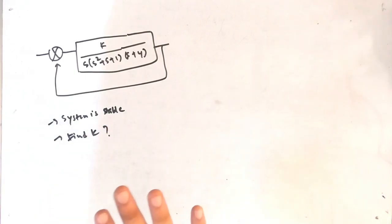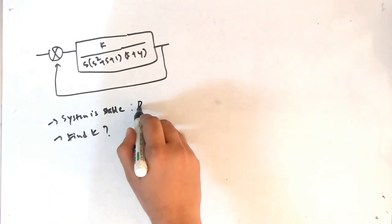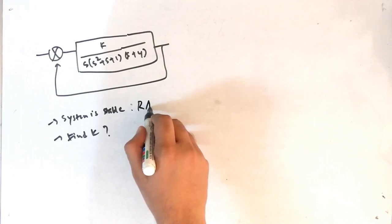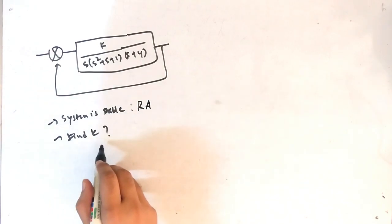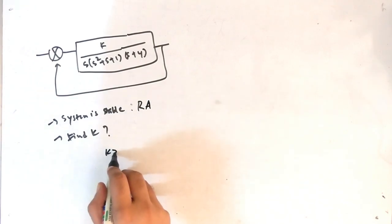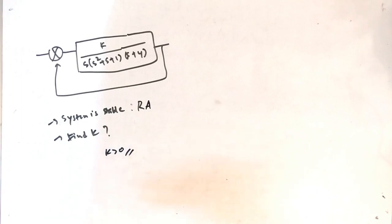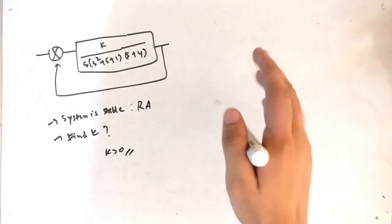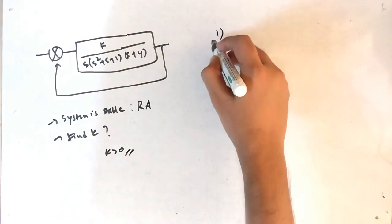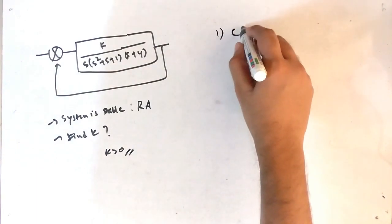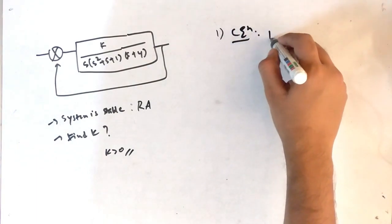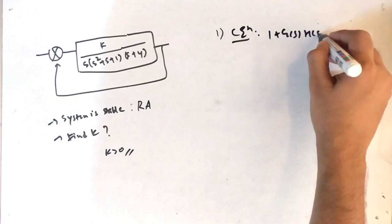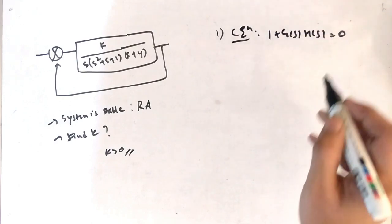If the system is stated as stable anywhere in the question, you have to remember to use the Routh array logic. Again, you have to find the value of k, which means k should be greater than 0. The first step is to get the characteristic equation, which is 1 plus G(s)·H(s) equal to 0.